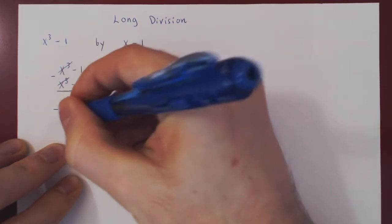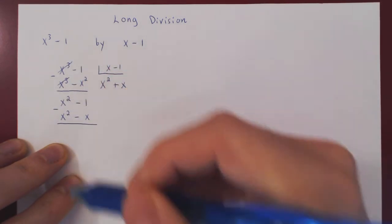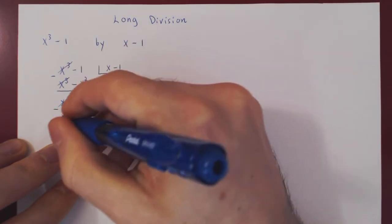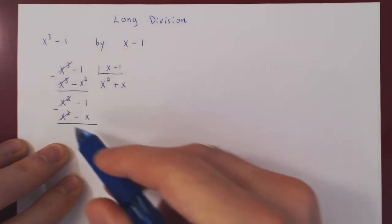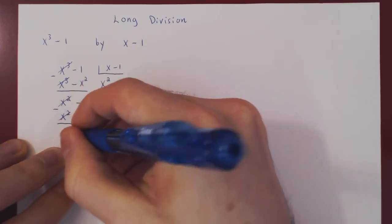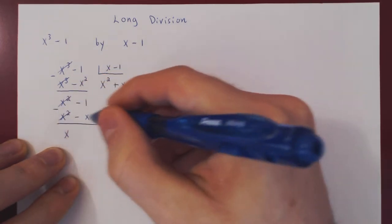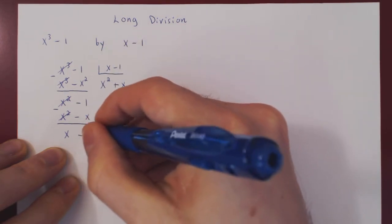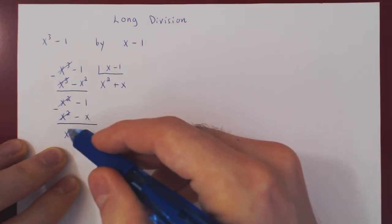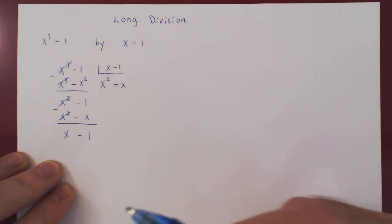We multiply all of x minus 1 by x and get x squared minus x. We subtract: x squared minus itself gives 0. Negative negative x is positive x. Negative 1 minus 0 is negative 1. The degree of the remainder is 1 and the degree of the divisor is 1, so we have to keep going.